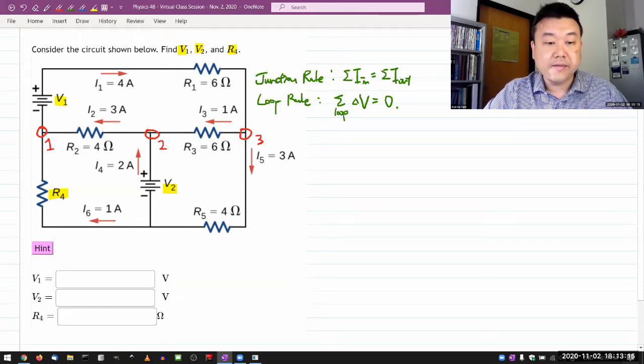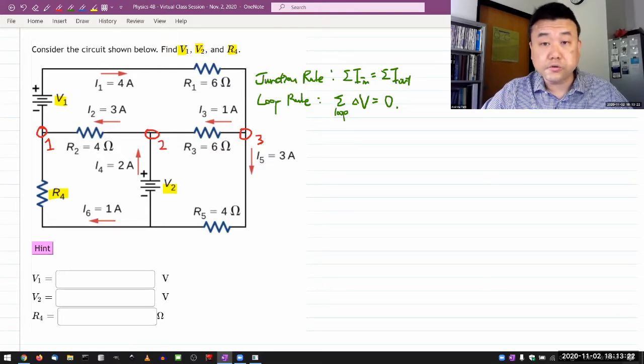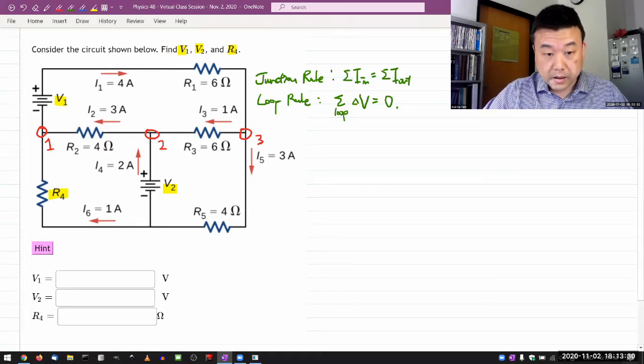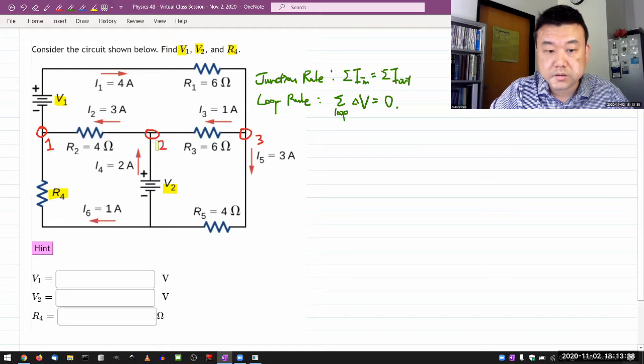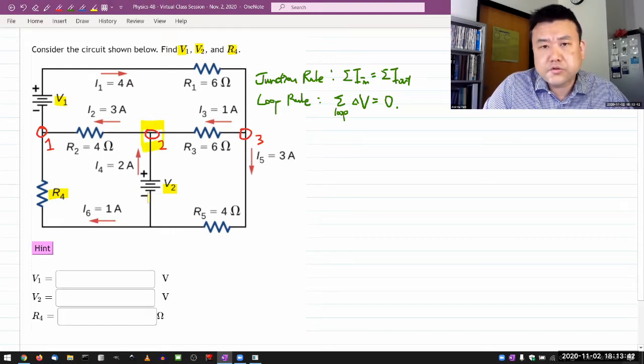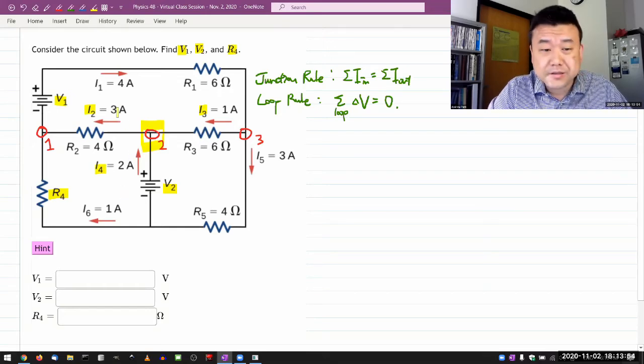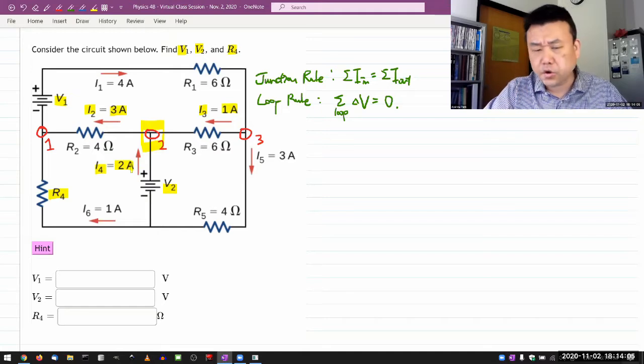So if you are following my usual advice, what you should be doing is you have to make sure that you don't use one of the four junctions because the last junction is guaranteed to give you a dependent equation, equation that's dependent on the first three you wrote down. So you would write down one, two, three junction rule equations. And then you will look at how many unknowns do I have left?